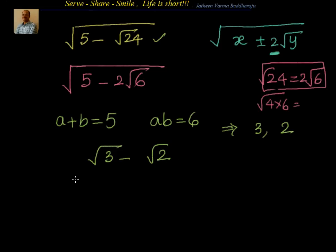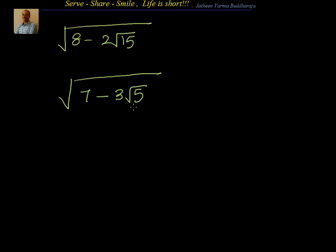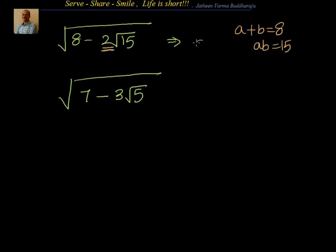Now let's do one more problem. Find the square root of 8 minus 2 root 15. The 2 is already there, so no modifications needed. Directly: a plus b equals 8 and ab equals 15. Splitting: two numbers adding to 8 with product 15 are 5 and 3. So the answer is root 5 minus root 3.